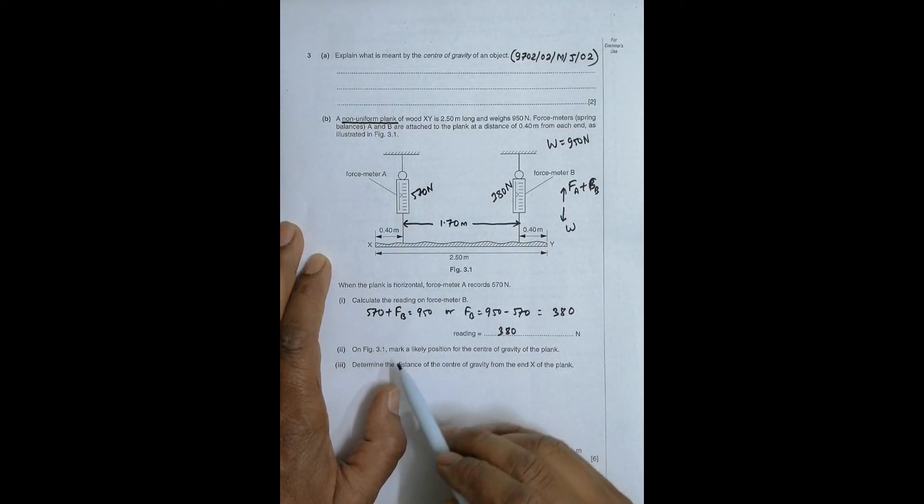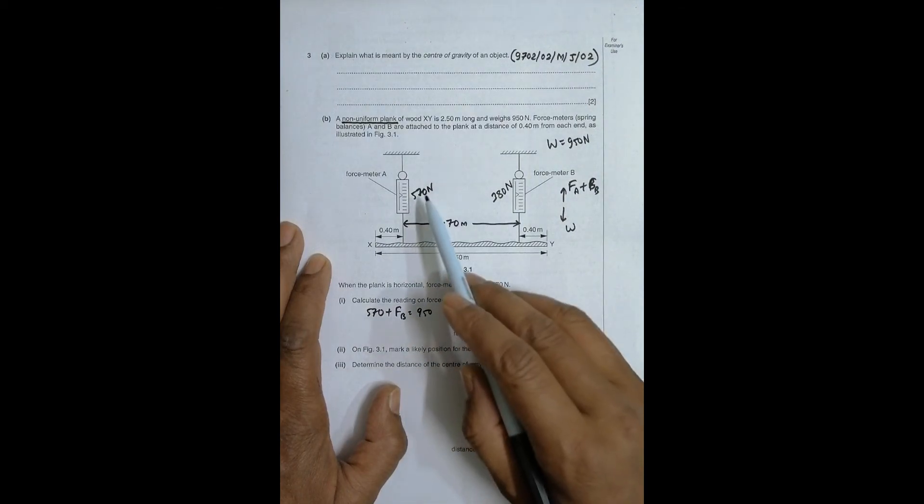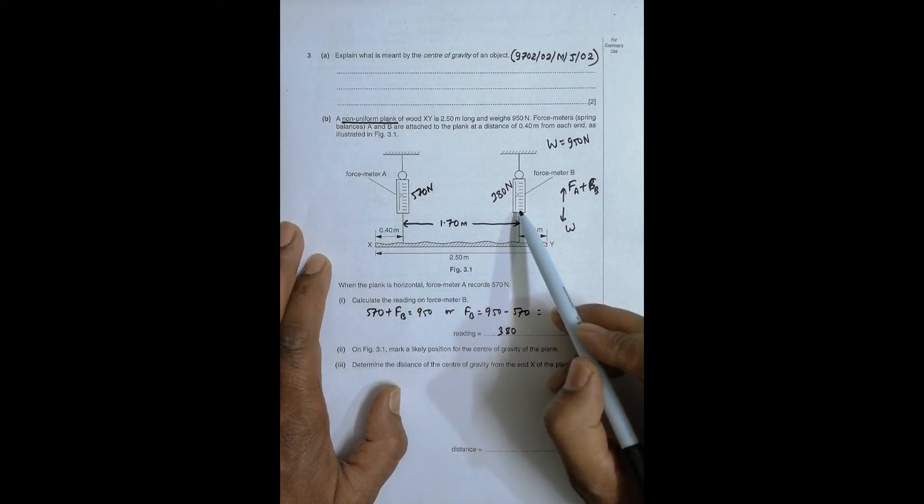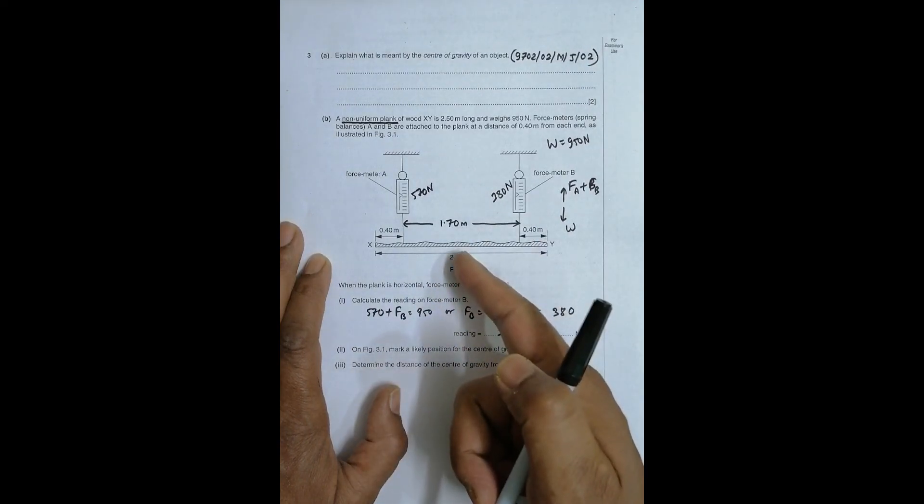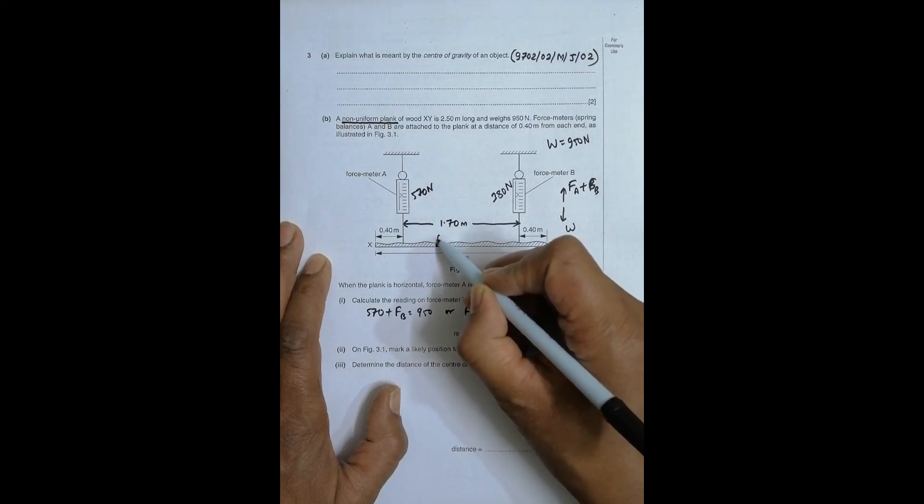On figure 3.1 mark a likely position for the center of gravity of the plank. So I have to mark a point, a probable point for the center of gravity. If you look at these things, the tension it records is high. So that means the load here should be somewhat high and the load here should be somewhat less. So if the load here is high, the CG should also be slightly tilted here.